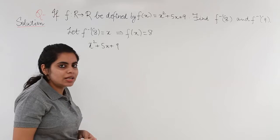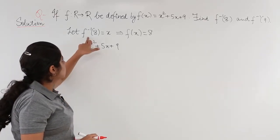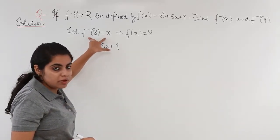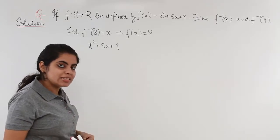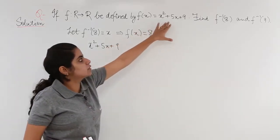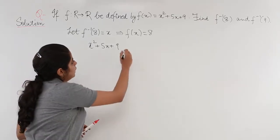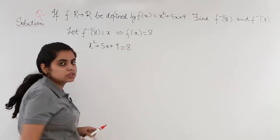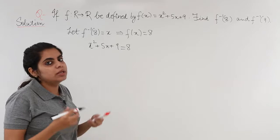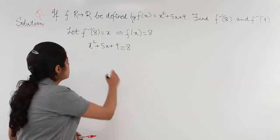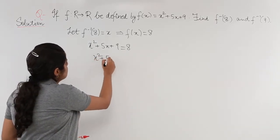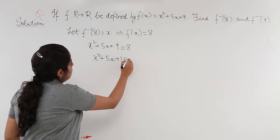We just have to transpose it. That means this inverse would become f(x) and 8 would be left as it is. Now f(x) has the value in the question. We substitute the value and write it equal to 8. Now I have to make the quadratic expression simpler. So I just write x² + 5x + 1 = 0.